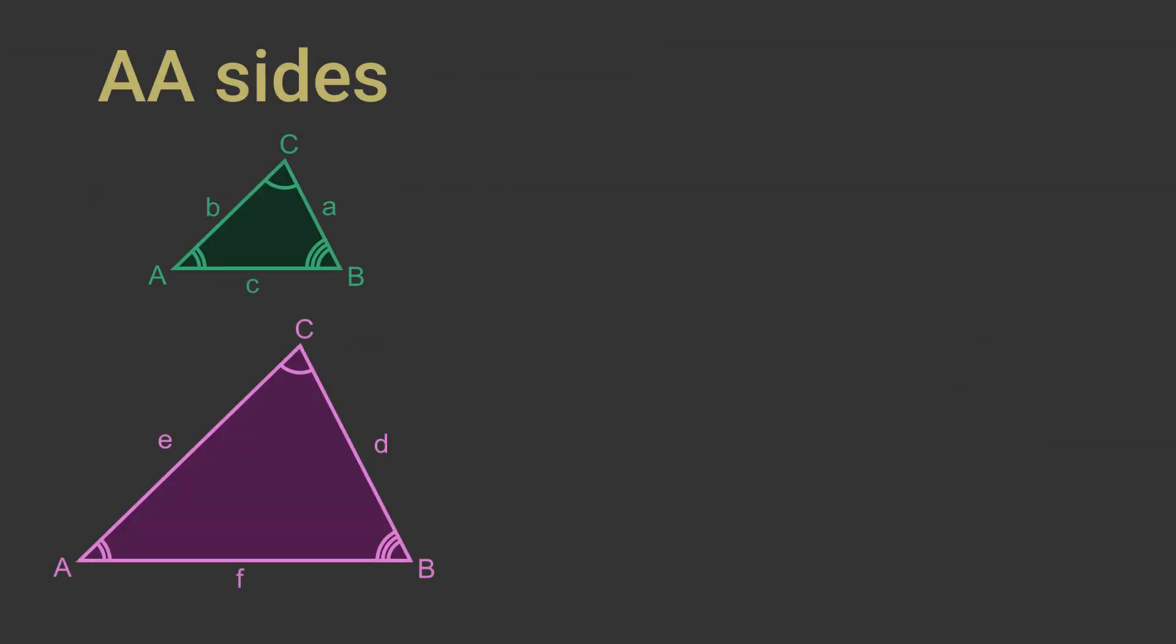Now we know that all the angles are the same we need to prove that all the sides are proportionate. We need to prove that side A divided by side D equals side B divided by side E equals side C divided by side F. We will use the sine rule to prove this. If you are not familiar with the sine rule there is a video link in the description.